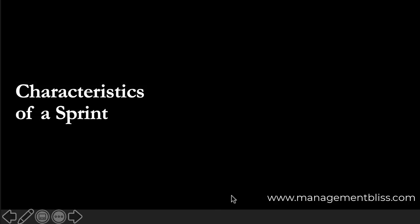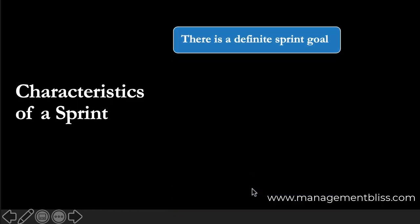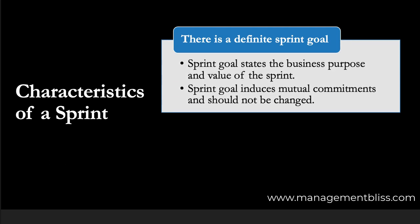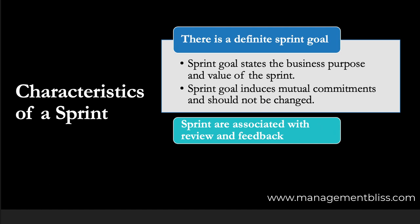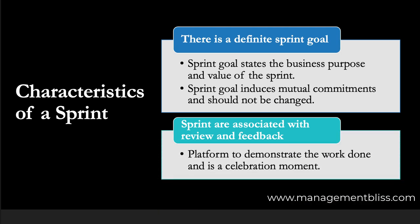The next characteristic is that there is a definite sprint goal associated with each sprint. Each sprint defines a goal that states the business purpose and value of the sprint. The sprint goal, once decided, should not be changed. Sprint goals induce mutual commitments in the team. The last characteristic is that each sprint cycle is associated with reviews and feedback. This review should happen at the end of the sprint, where the team gets a chance to demonstrate their work done in a sprint.